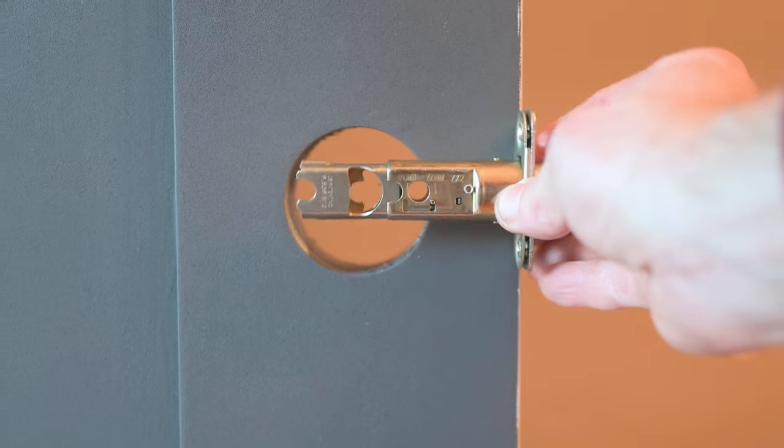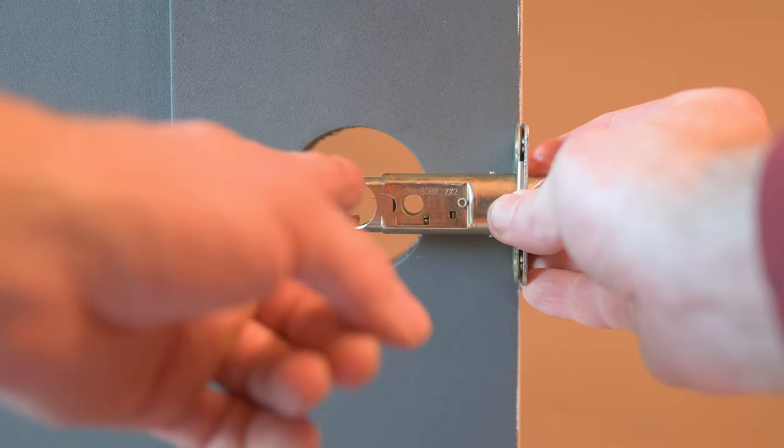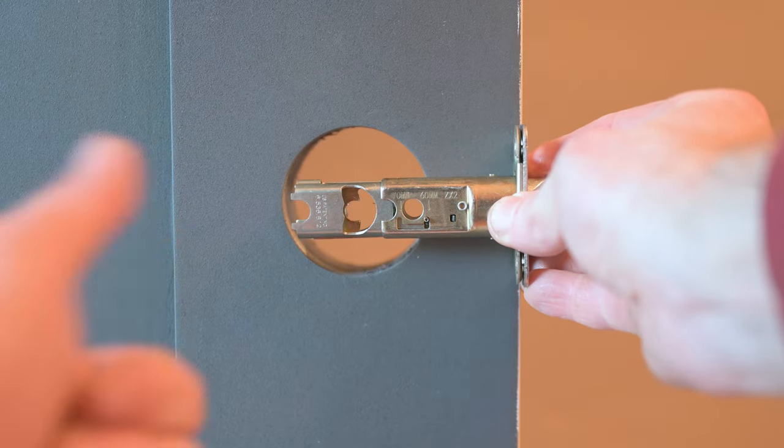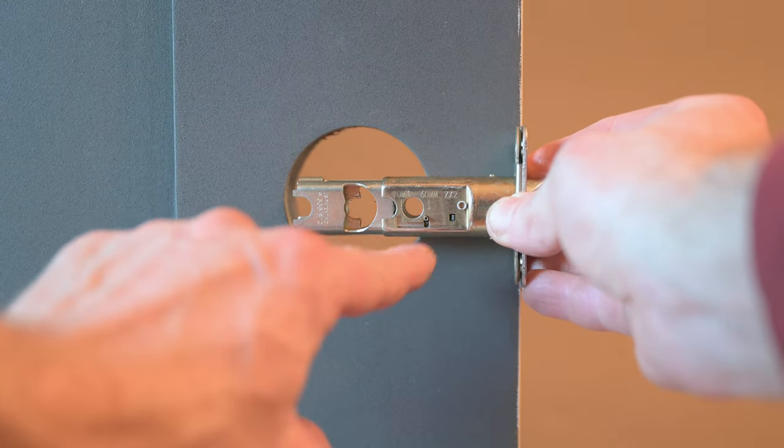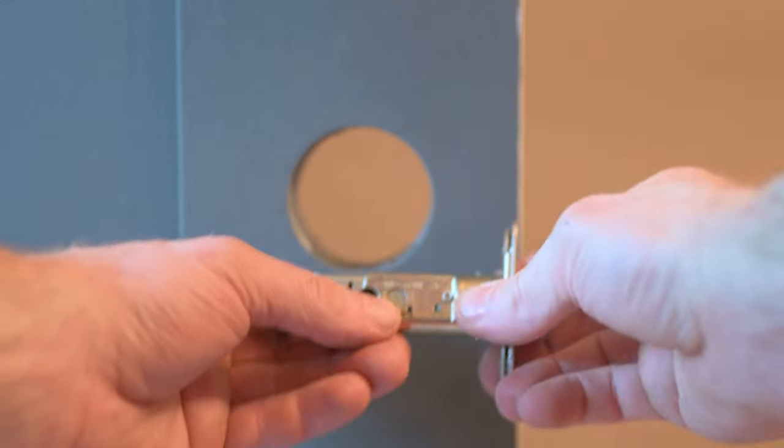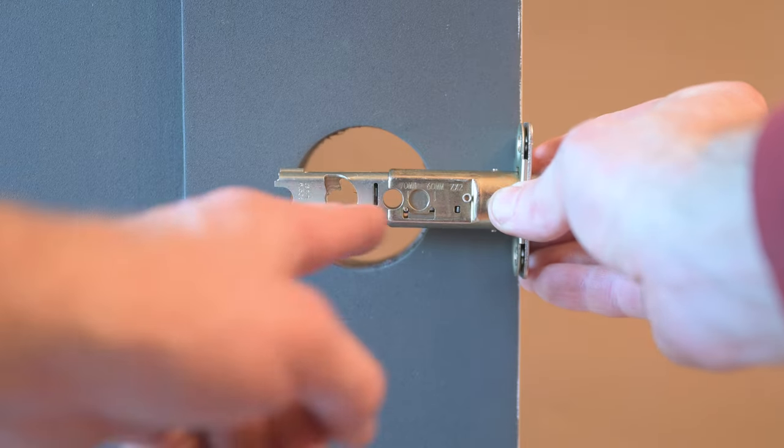Now hold the bottom latch up against the door to see if this D-shaped hole is in the center of the hole in the door, which it is. If it weren't, there's a little adjustment here we can make with this pin to make it longer. And so now that D-shaped hole isn't centered.